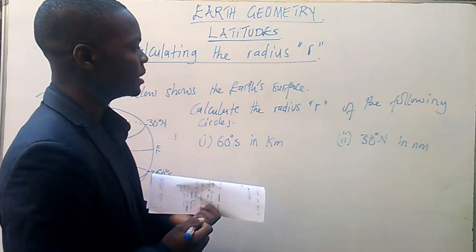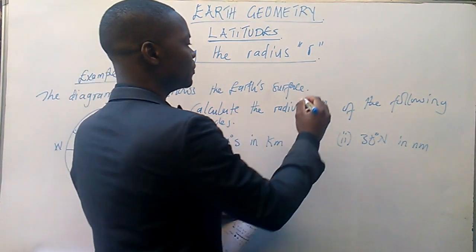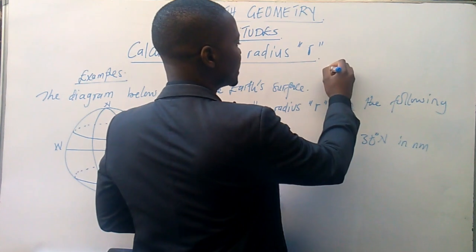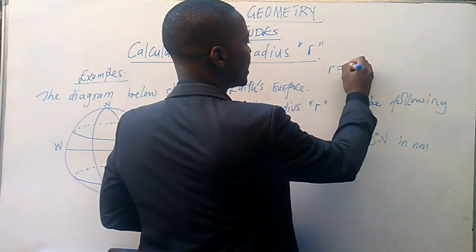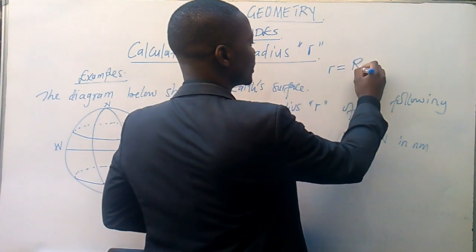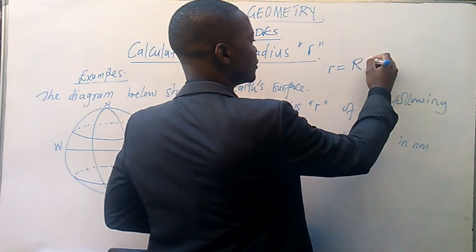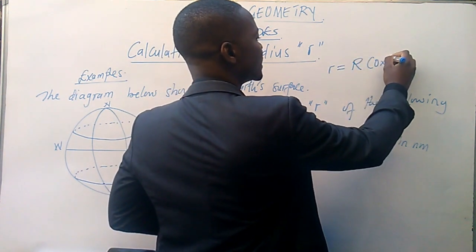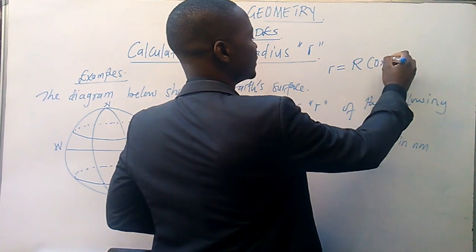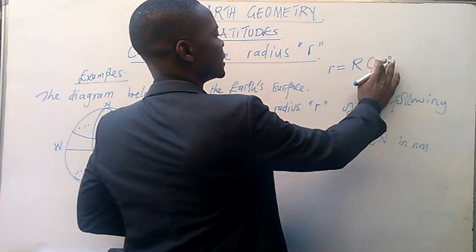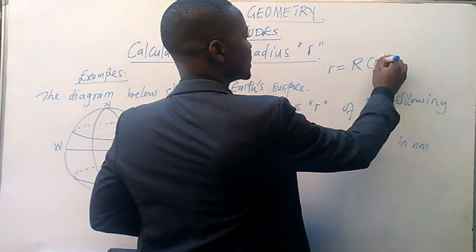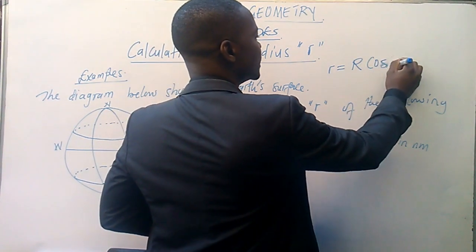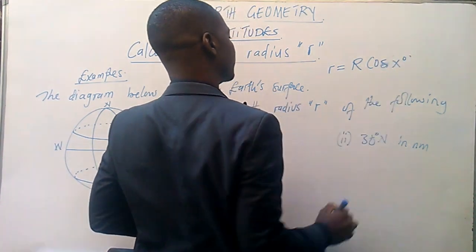I said that in the previous video, the radius is given by the formula: small r equals capital R times cos x degrees. So, r equals R cos x degrees.